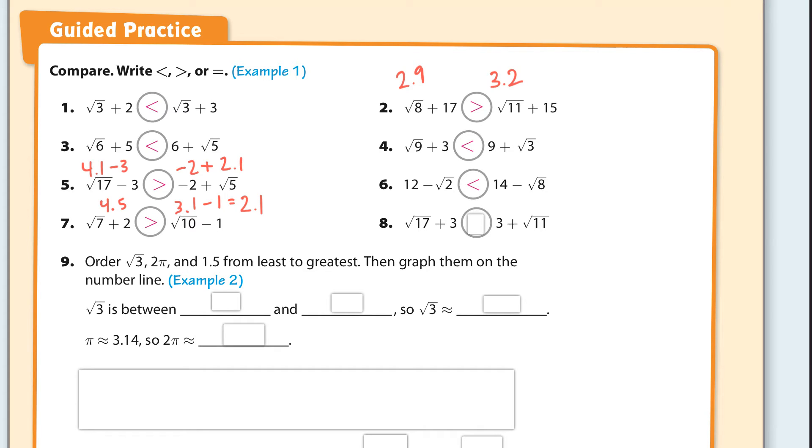And the square root of 17, I know the square root of 16 is 4. So that's about 4.1 plus 3. That would be 7.1. And this is 3 plus, that's like 3.2. So that one's pretty easy. It's open to the left.